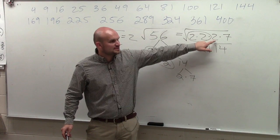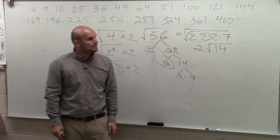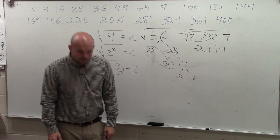But I can't take the square root of 2×7 because they don't have that pair. So that's why it's still 14 under there. Make sense? OK.